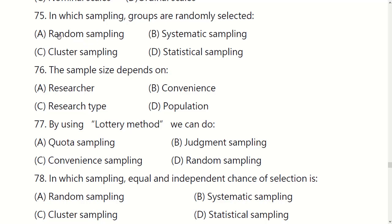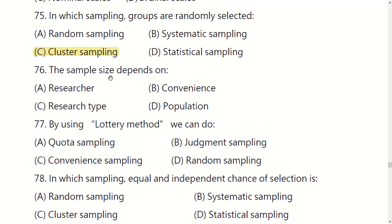In which sampling are groups randomly selected? Options are: random sampling, systematic sampling, cluster sampling, or stratified sampling. The right option is C: cluster sampling.